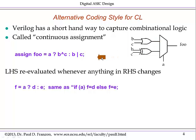You might be wondering how this statement is triggered. Well, this is the continuous aspect — this statement is re-evaluated whenever anything on the right-hand side changes. That is, there's an implicit trigger: whenever A or B or C changes, it is re-evaluated. We just don't need an explicit always at statement like we did in the previous example.